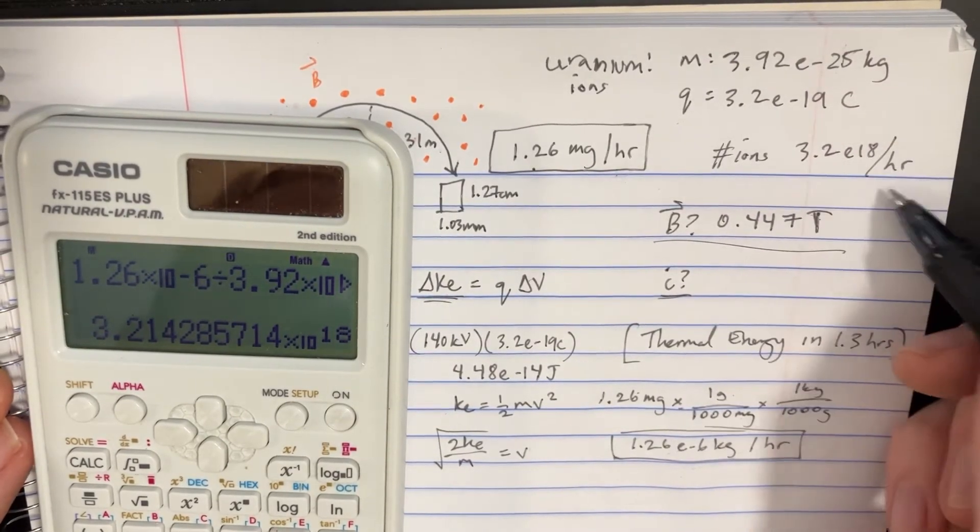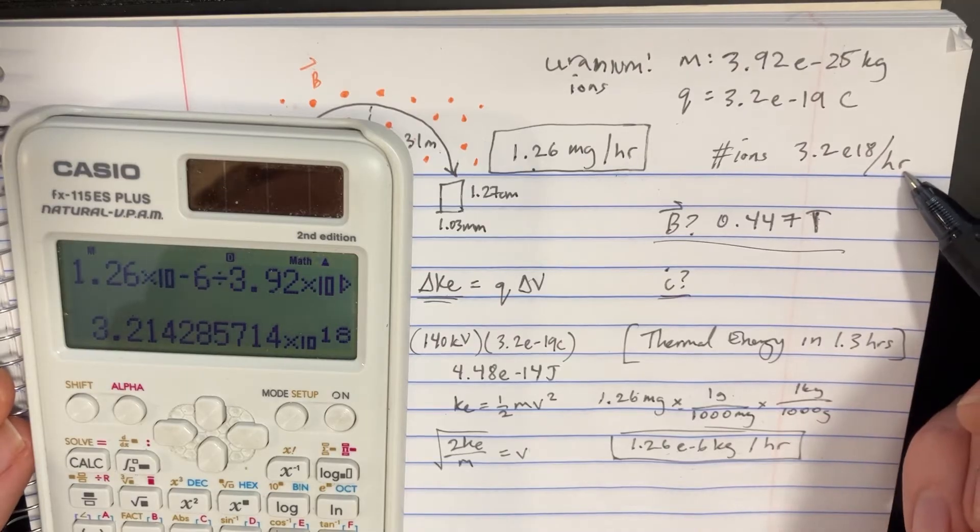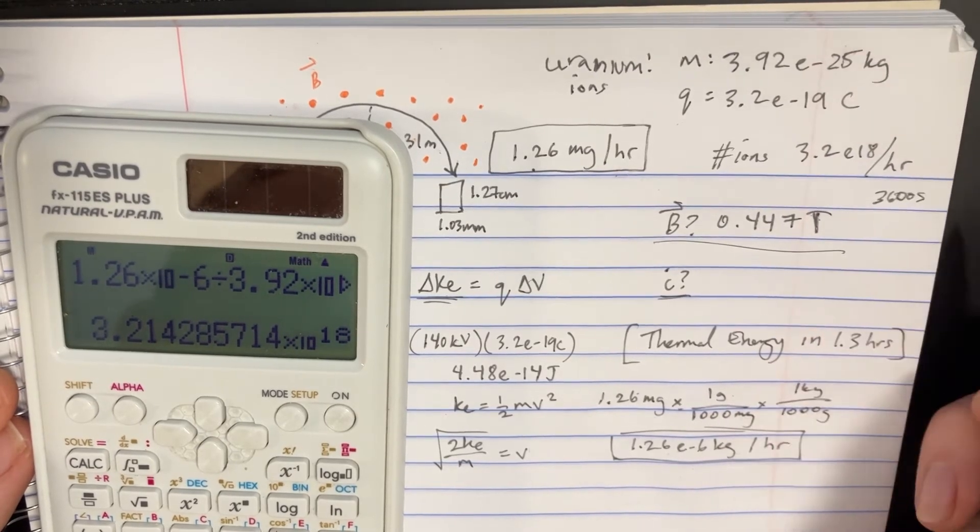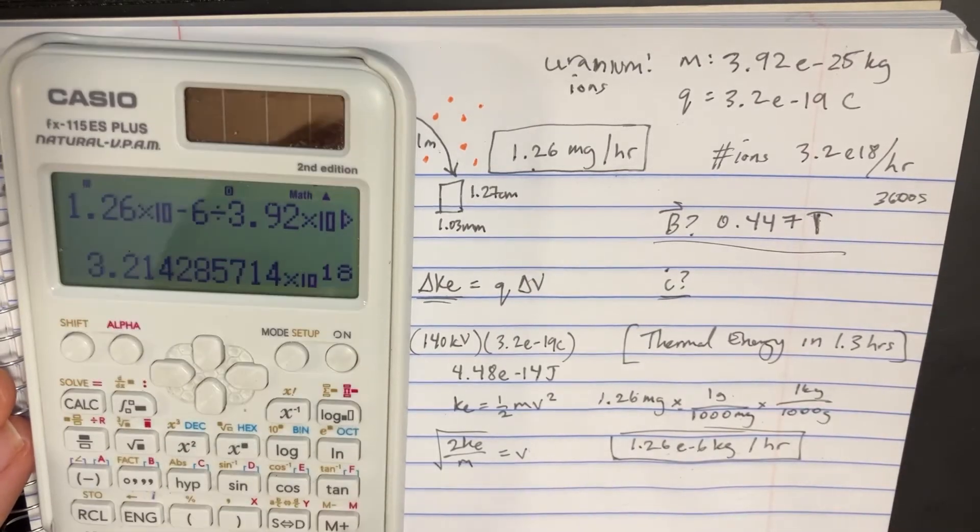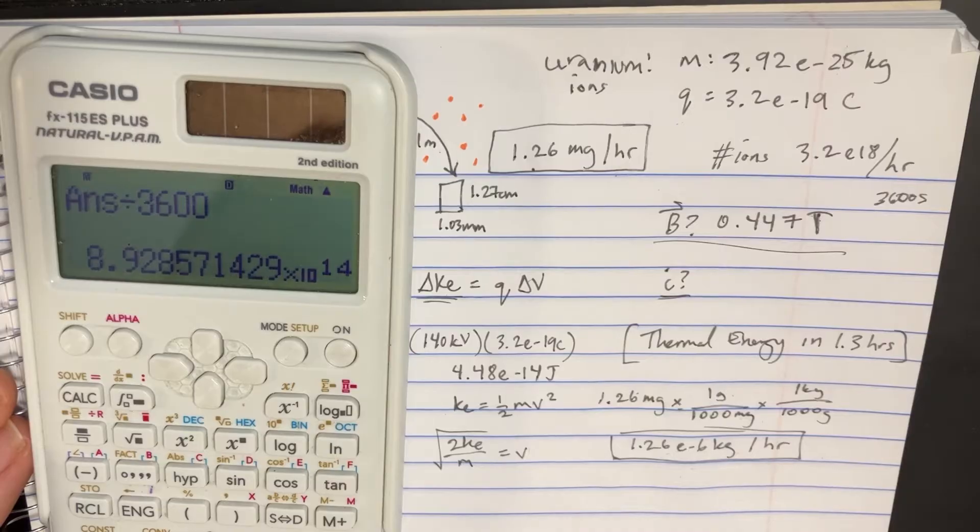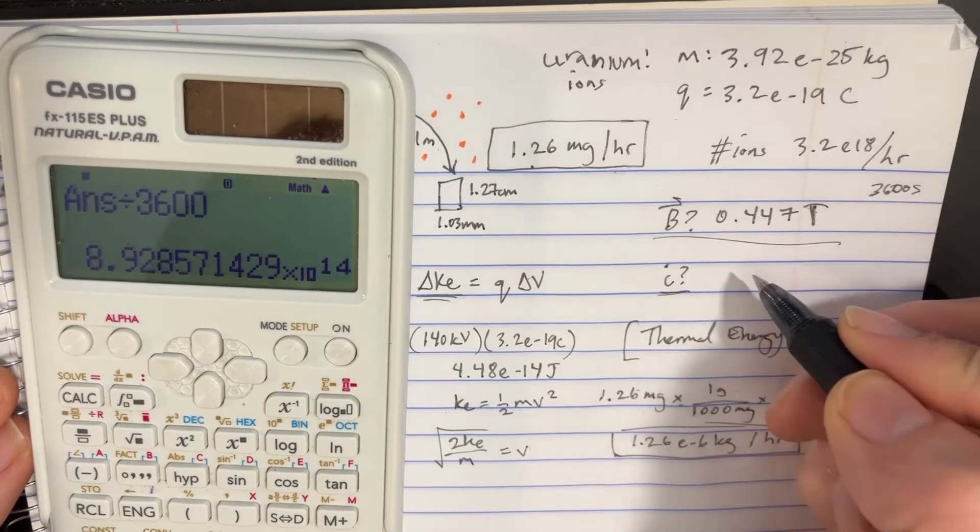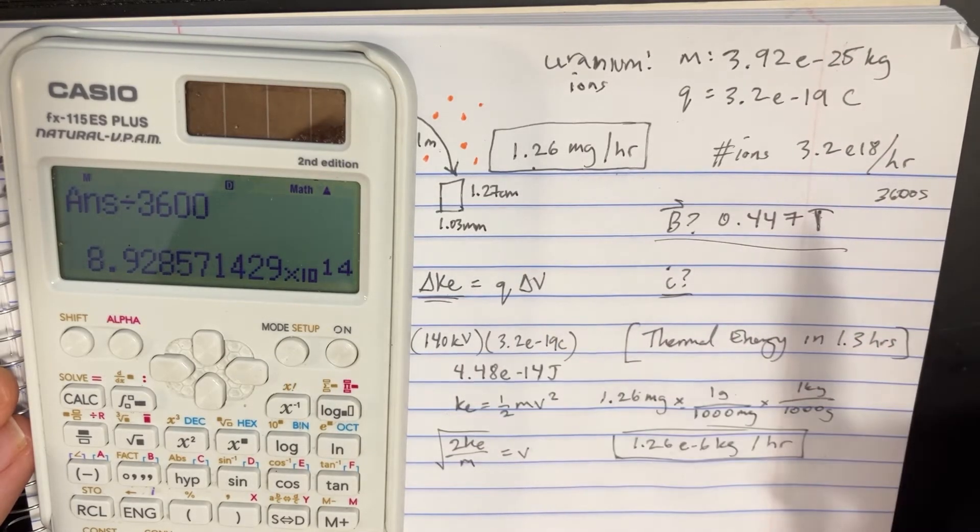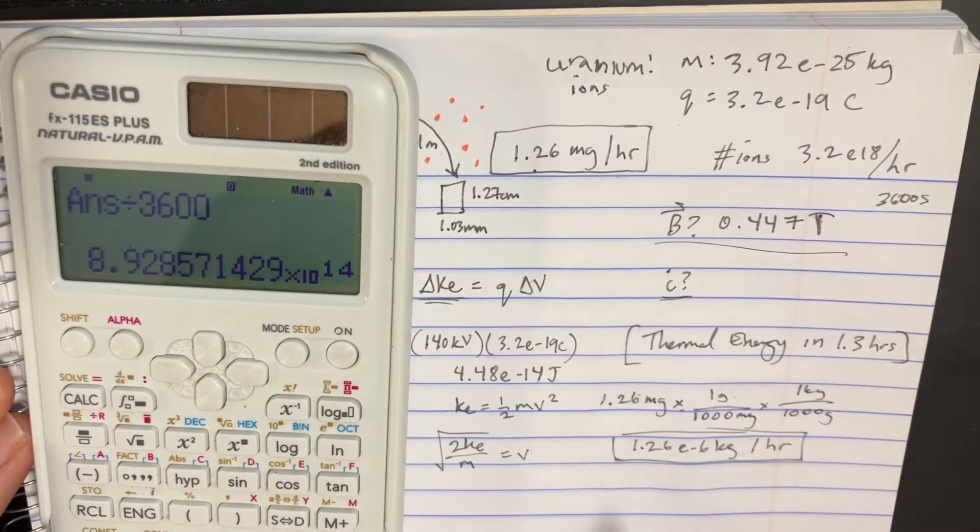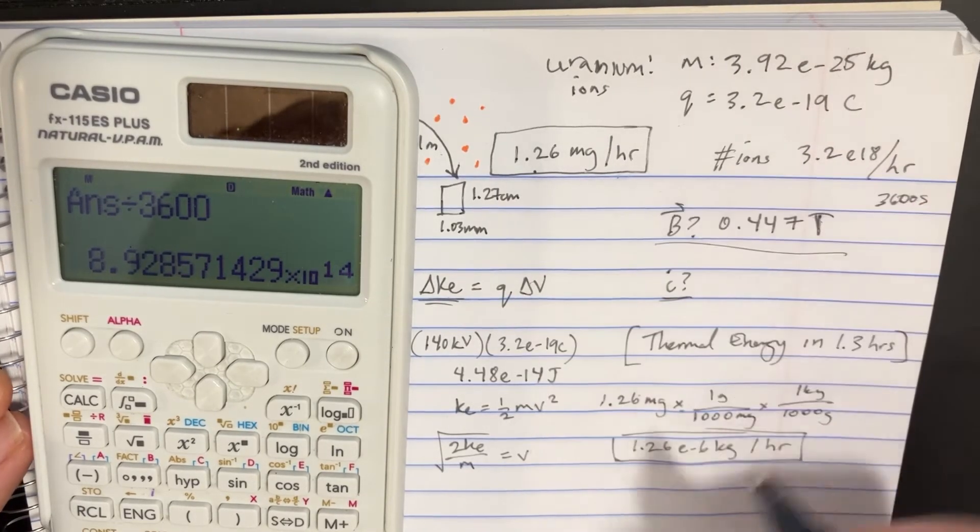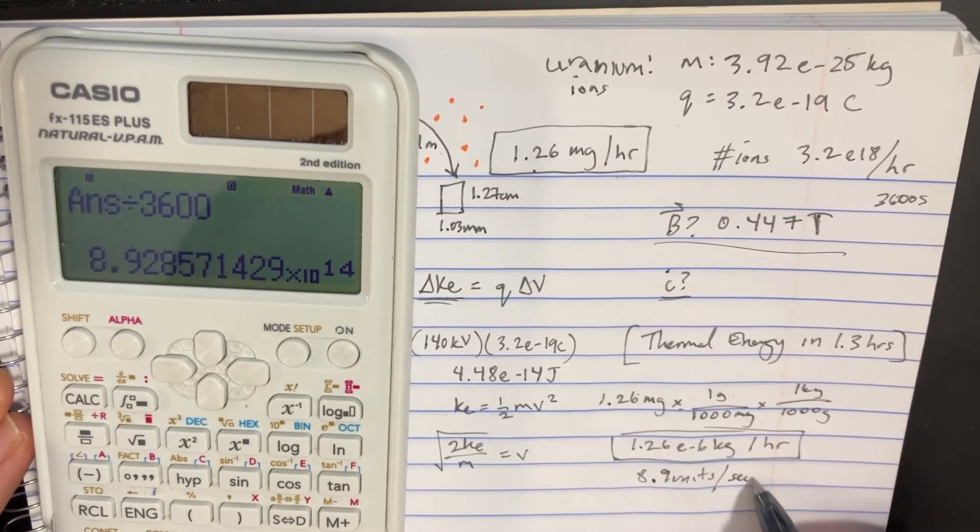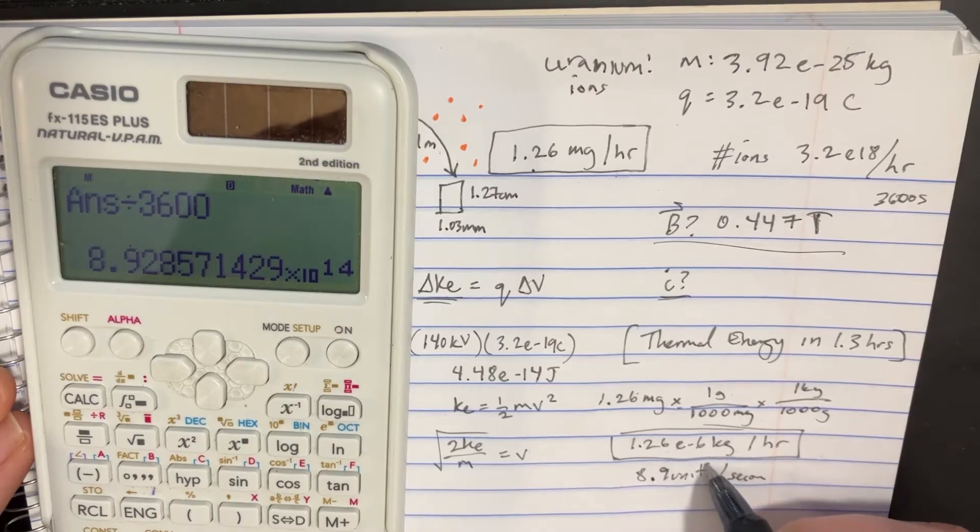Now let's convert that to seconds. We're going to take the hour and that's 3,600 seconds. So we're going to divide this number by 3,600 and we get that many units per second. We've got 8.9 units per second and this is actually to the 14th e to 14.